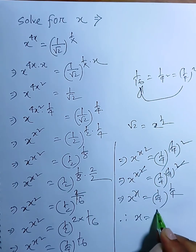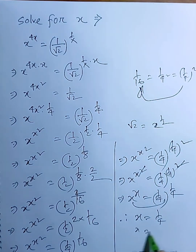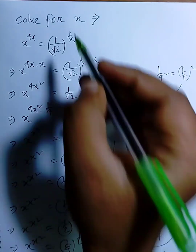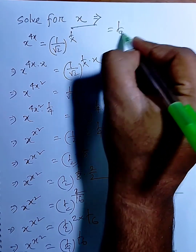Now I can say, x equals 1 by 4, or x equals 1 by 4. So the value of x is 1 by 4.